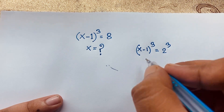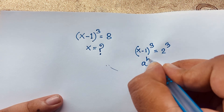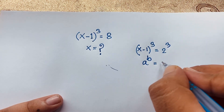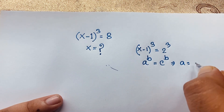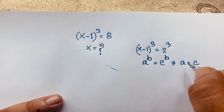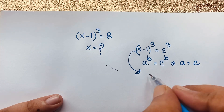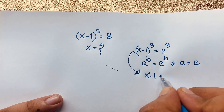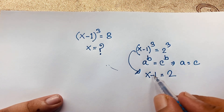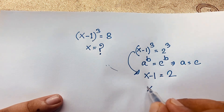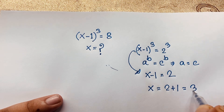According to the exponential formula: if a to the power v is equal to c to the power v, then a is equal to c. Applying this formula here, we get x minus 1 is equal to 2, and moving 1 to the other side gives x is equal to 2 plus 1.